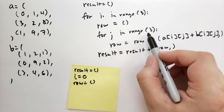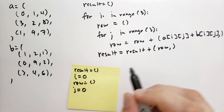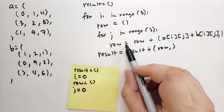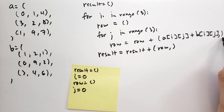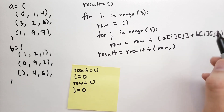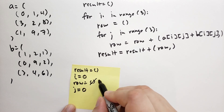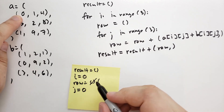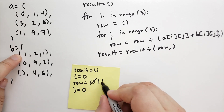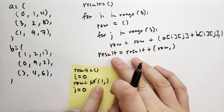For j in range(3), j is now 0. Then row equals row plus a single-item tuple containing a[i][j] plus b[i][j]. So a[0][0] is 0 and b[0][0] is 1, giving 0 plus 1 equals 1. Now row is a tuple with one element.